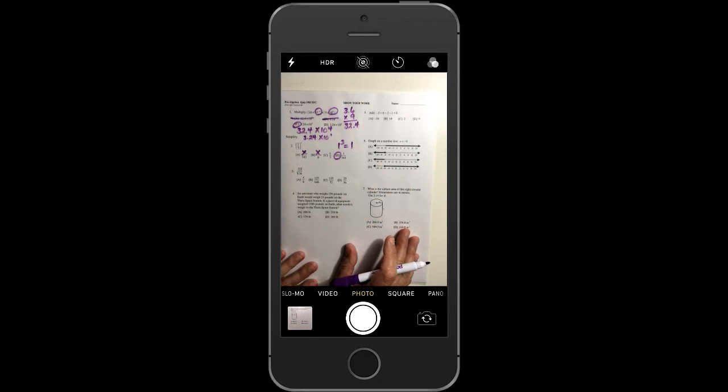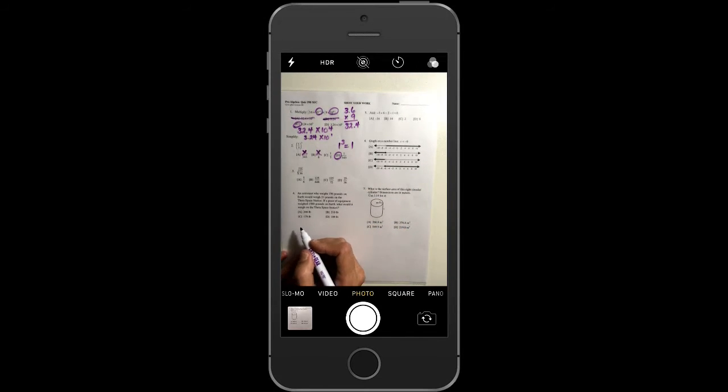Nobody missed number 3, so I'm not going to worry about number 3. A couple people missed number 4. You should have said on Earth, a person weighs 156 pounds. On the space station, they weigh 21 pounds. And then the equipment weighed 1560, and you might have seen something there.